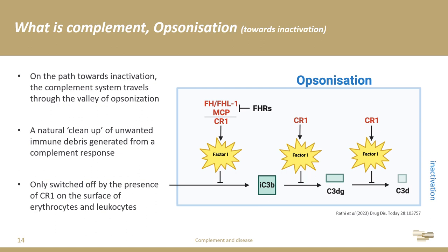There is a problem, however: iC3B remains a potent opsonin. All those immune cells now at the site of complement activation still recognize it as a danger signal and it induces phagocytosis. This is switched off by factor I cleaving iC3B into even smaller degradation products — C3DG and eventually C3D. Factor I can only do all of this in the presence of a cofactor, and there are many cofactors that allow factor I to cleave C3B into iC3B, but only one that allows it to fully switch off the opsonization and completely switch off a complement response.